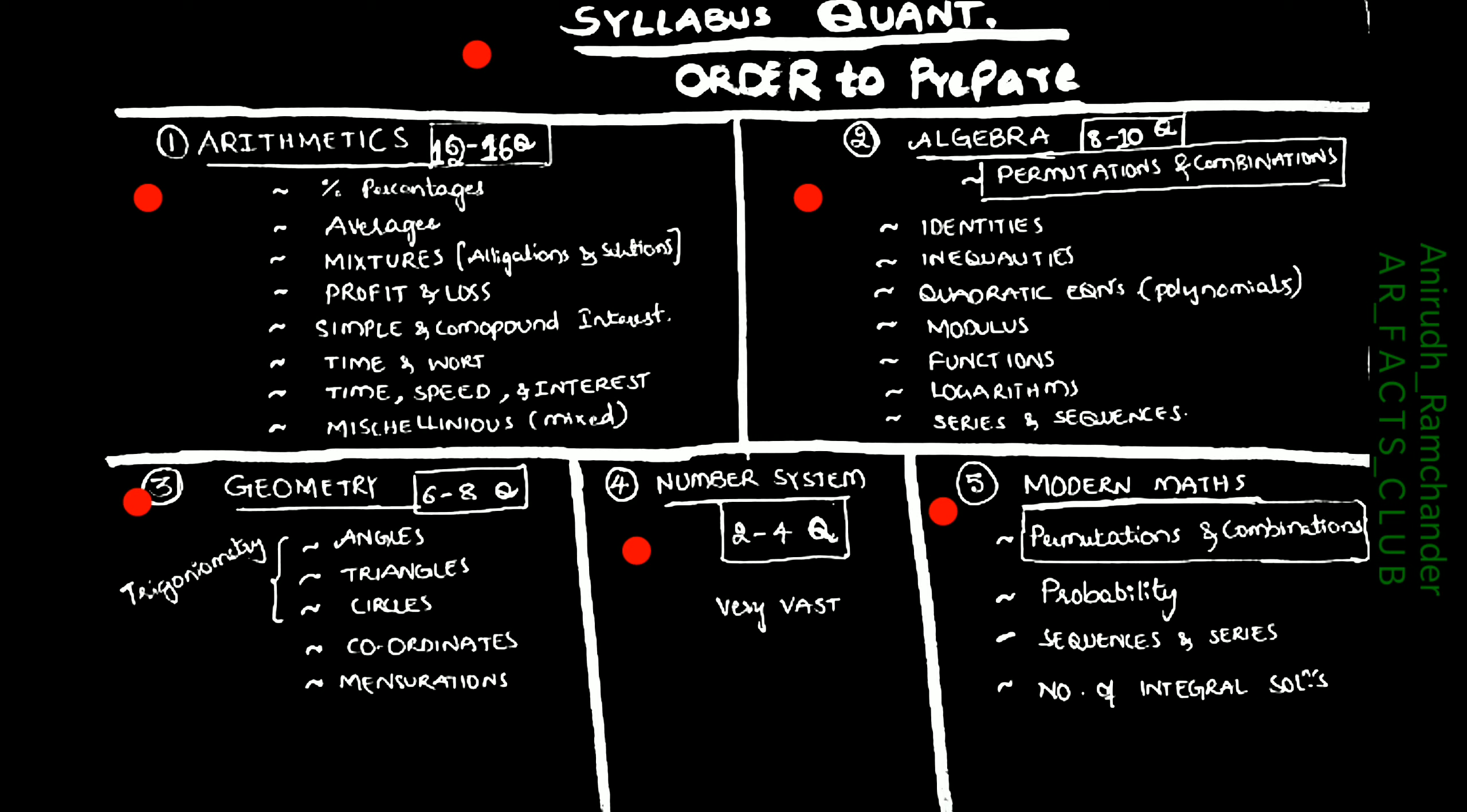Then, coming to Modern Maths. Here, you will be covering permutations and combinations, which are already covered when preparing for algebra, and probability, series and sequences, number of integral solutions. So this is the order you have to prepare. And for your idea, don't get confused over advanced maths. What is advanced maths? Simply, algebra and geometry constitute advanced maths.